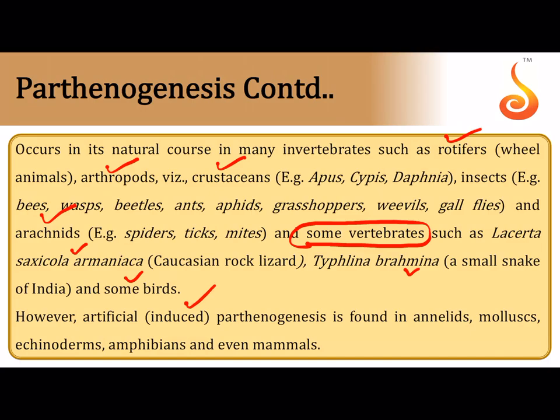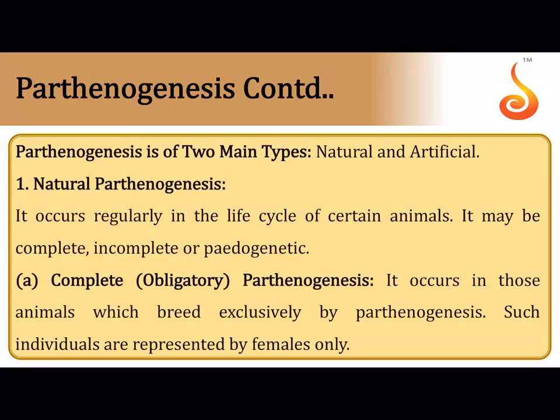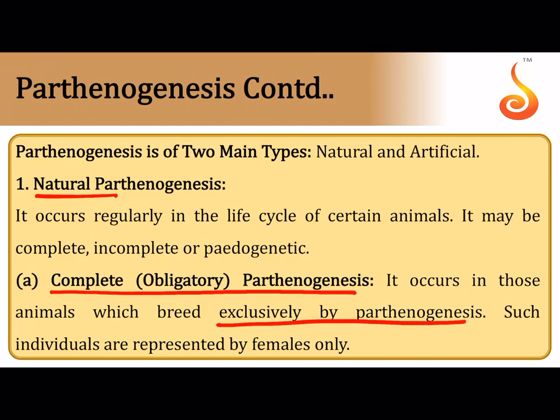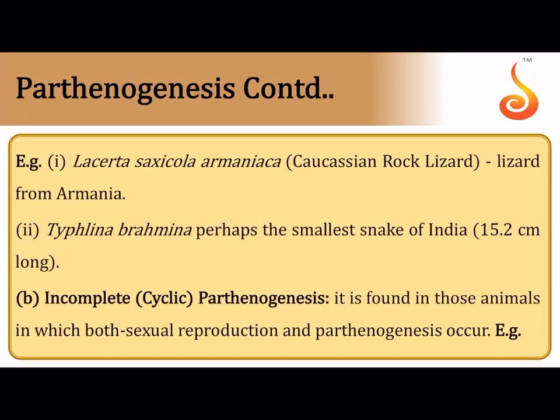In parthenogenesis, only the female parent is involved since the egg develops into a young one without sperm contribution. It may also be induced in some plants and even in mammals. Natural parthenogenesis happens as part of the life cycle of certain animals. Obligatory or complete parthenogenesis is where the animal has no other choice and reproduces exclusively by parthenogenesis, as seen in Lacerta and Typhlina bramina.